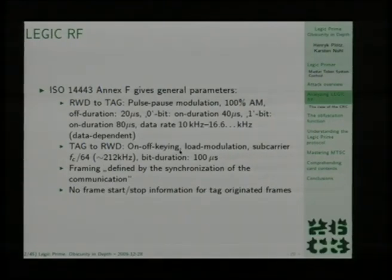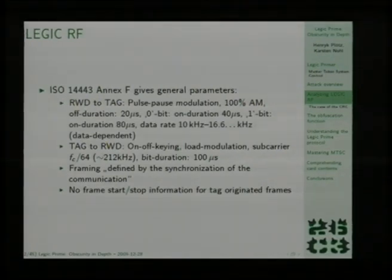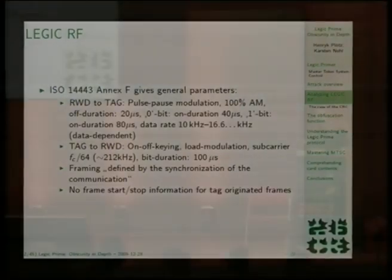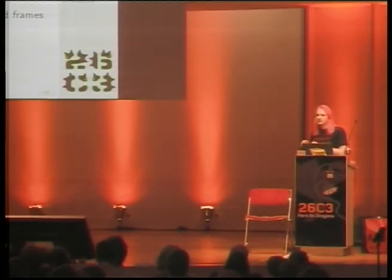Two things that are not specified in the ISO Annex that we had to find out ourselves were the framing, which is simply said to be defined by the synchronization of the communication — whatever that might mean. It turned out they meant that the card frame starts at a fixed point in time after the reader frame. The card frame is not limited by start or stop bits, so you have to know how many bits the card is going to send. Especially a mute — no card — is indistinguishable from a card sending only zero bits.